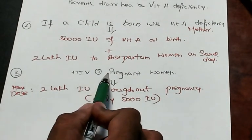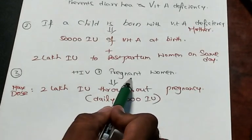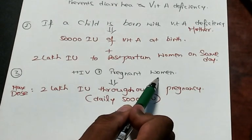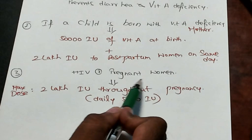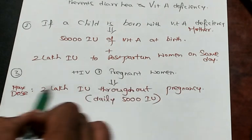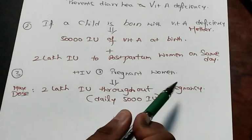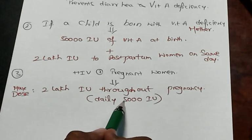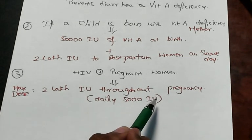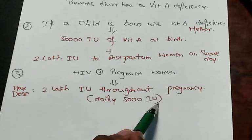HIV positive pregnant women, how do you want to give? A lot of research has shown that if you give vitamin A, there is great advantage. Maximum dose of 2 lakh international units throughout the pregnancy, which is about daily 5,000 international units.